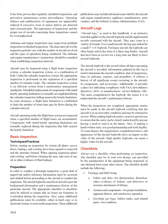Under the calendar inspection system, the appropriate inspection is performed on the expiration of a specified number of calendar weeks. This is an efficient system from a maintenance management standpoint. Scheduled replacement of components with stated hourly operating limitations is normally accomplished during the calendar inspection. In some instances, a flight hour limitation limits the hours flown during the calendar interval. Aircraft under the flight hour system are inspected when a specified number of flight hours are accumulated.